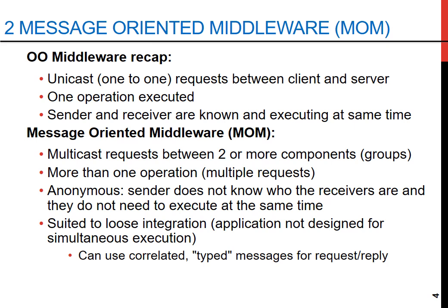In contrast, message oriented middleware supports multicast requests, allowing messages to be sent to multiple components or groups at the same time. It's designed to handle multiple operations in parallel. Message oriented middleware is anonymous, meaning the sender doesn't need to know the recipients, and they don't have to be active at the same time. This suits systems that need loose integration where components operate independently.